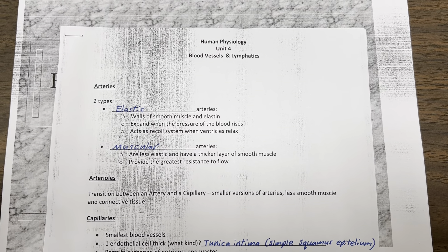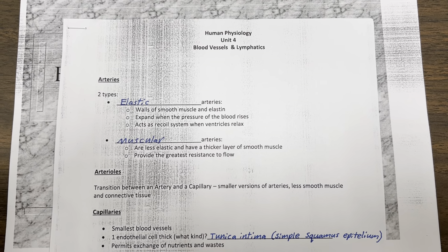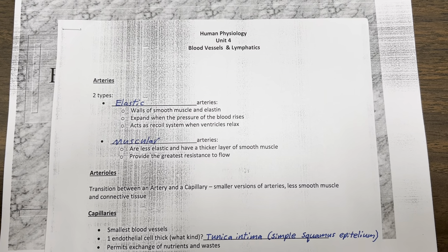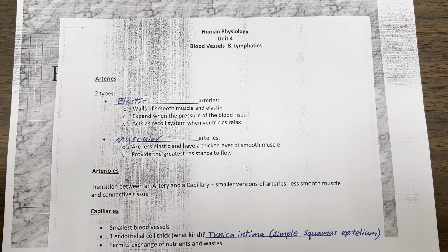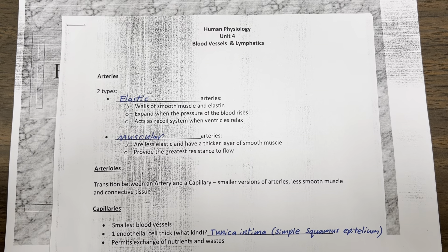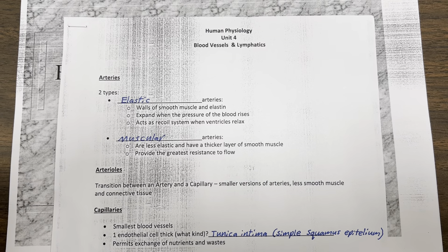There are two types of arteries: elastic arteries and muscular arteries. Elastic arteries have walls of smooth muscle and elastin that expand when the pressure of the blood rises. Elastic arteries act as a recoil system when the ventricles relax.